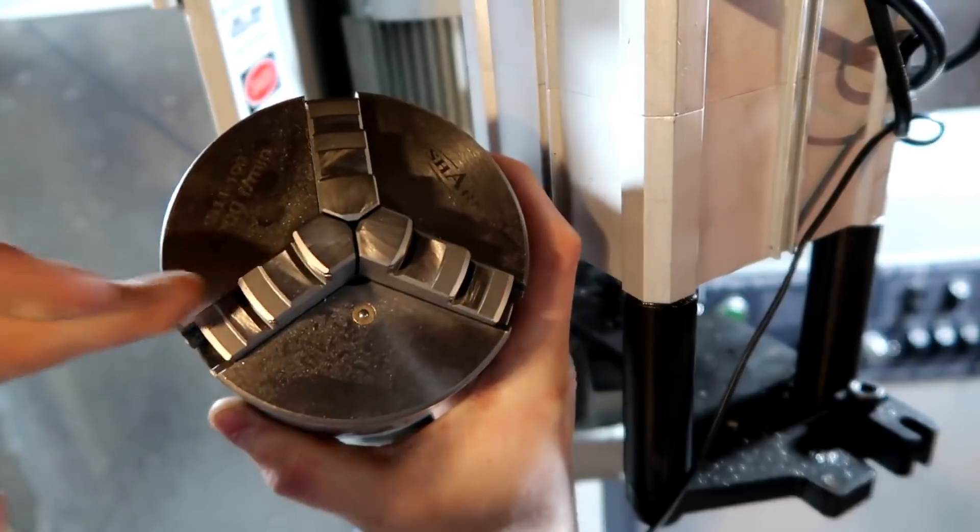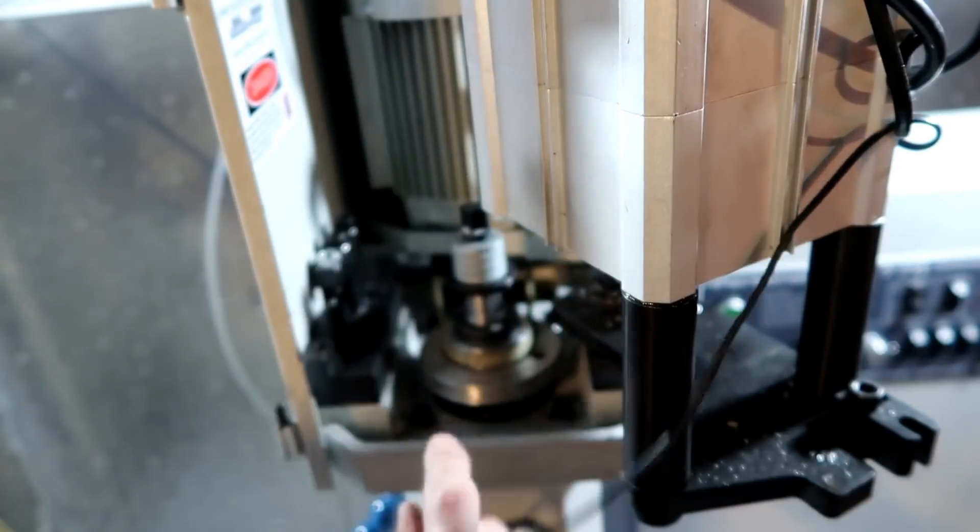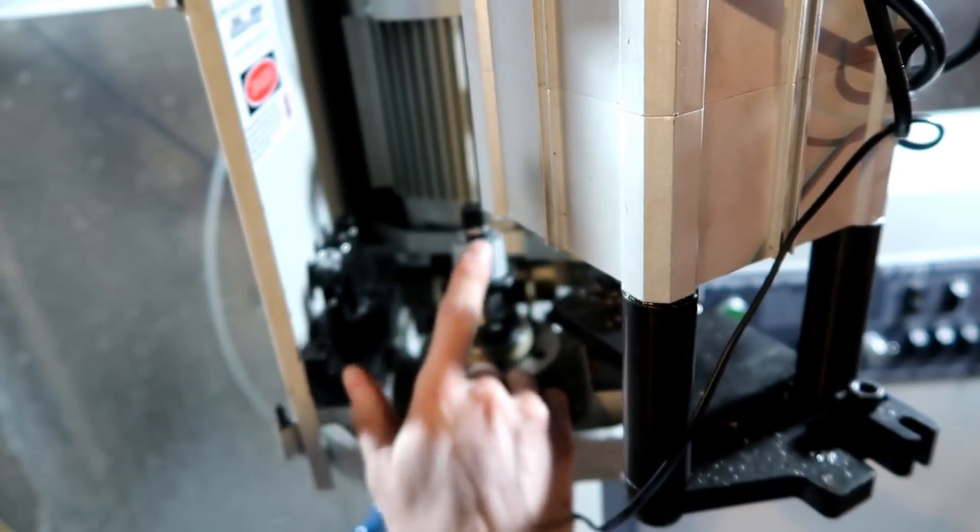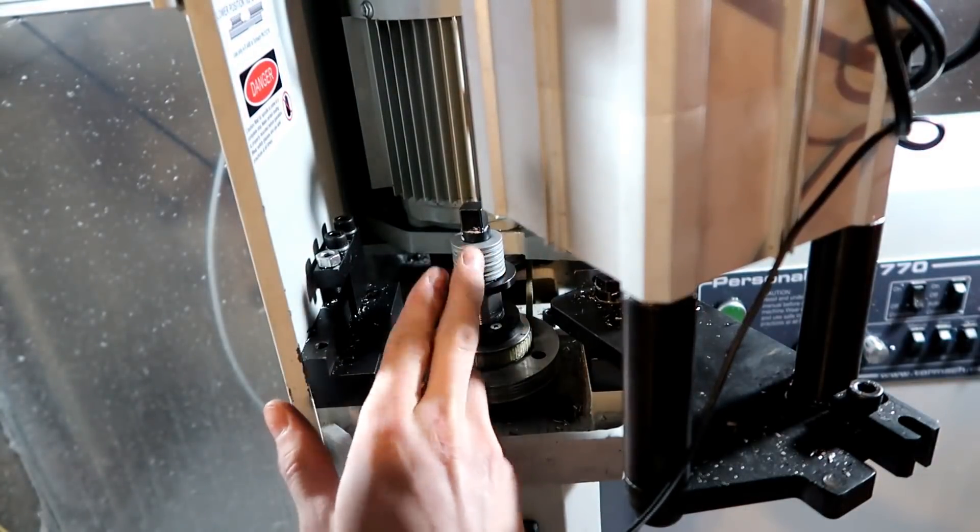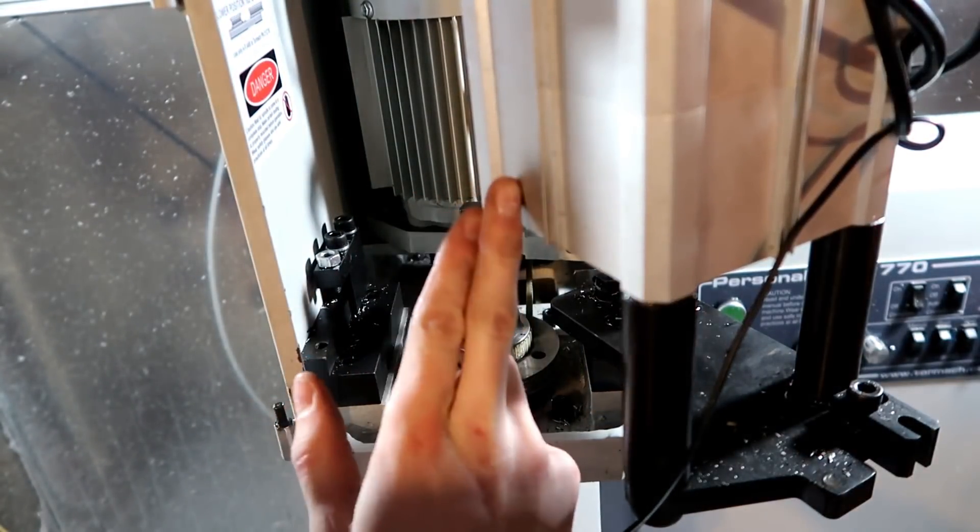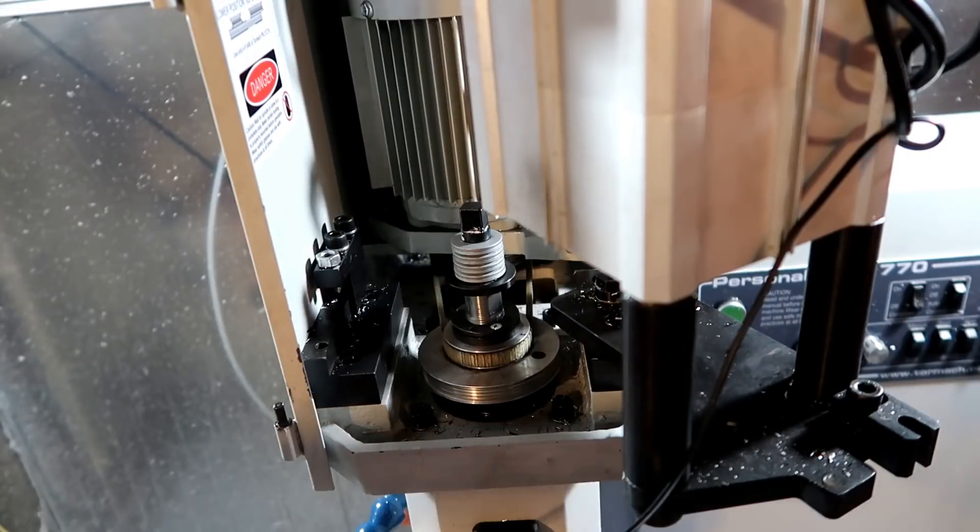I'm going to expand the jaws of the chuck, but I'm going to leave these Belleville washers on here. These spring washers are for the power drawbar, but I'm just going to go ahead and leave them on there.